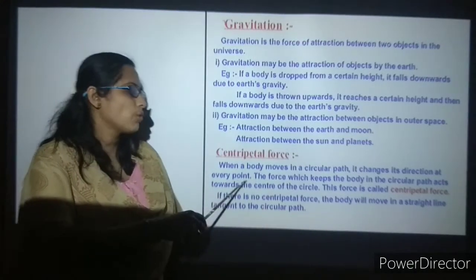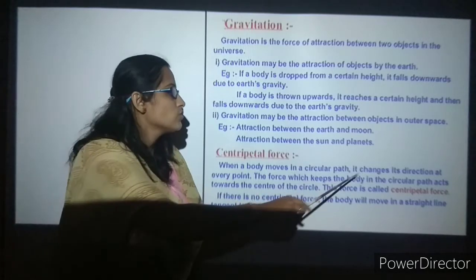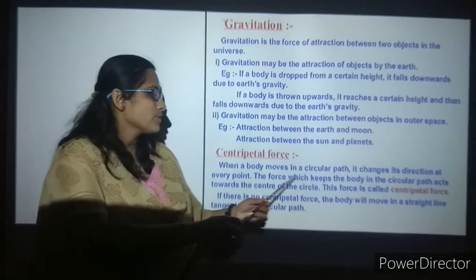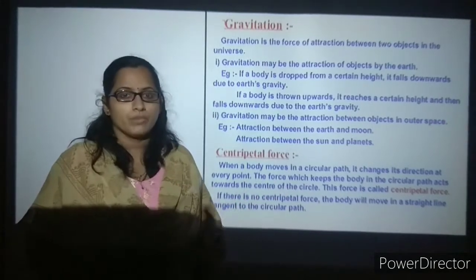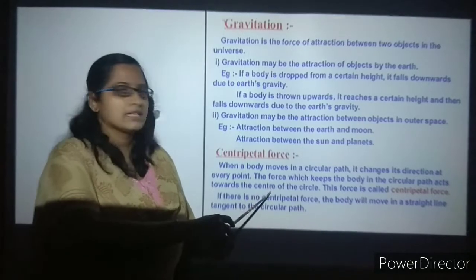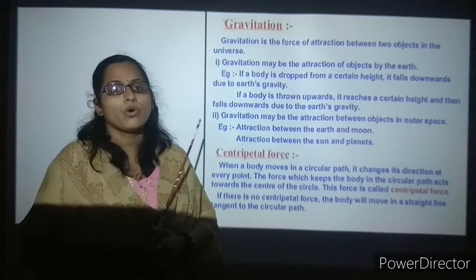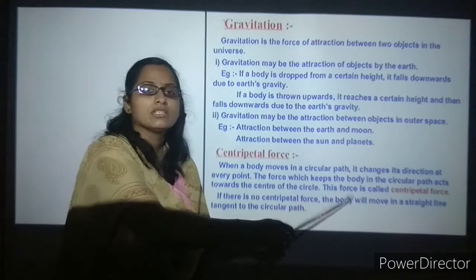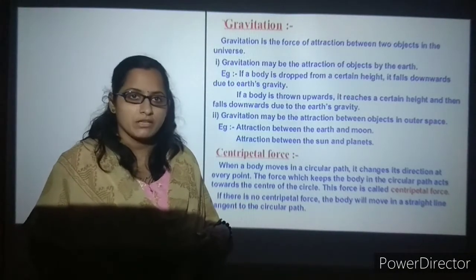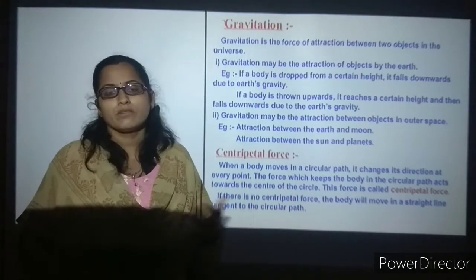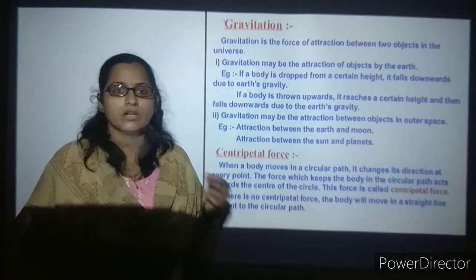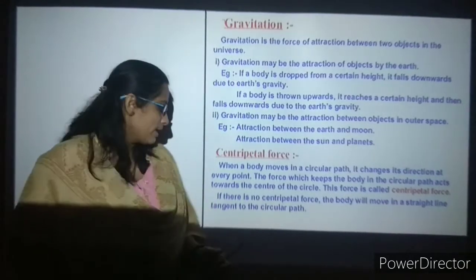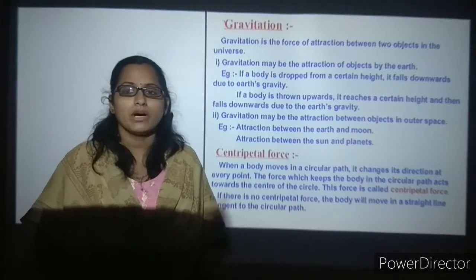When a body moves in a circular path, it changes its direction at every point. The force which keeps the body in the circular path acts towards the center of the circle — this is known as centripetal force. If there is no centripetal force and you release the object, the body will move in a straight line tangent to the circular path.